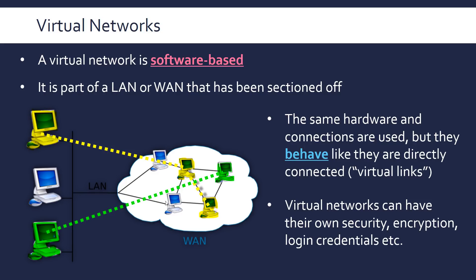This might be a VPN — a virtual private network. For example, this yellow network might be a company and you're working from home, connecting to the company's network through a virtual network. Or this might be a server in America and you're connecting to it so all your traffic goes through that server, allowing you to watch American Netflix — though that used to work more reliably. There are various reasons to use virtual networks, but the key point is they're software-based: some software makes the network behave like it's directly connected, even though the physical connections are the same as they would be without a virtual network.